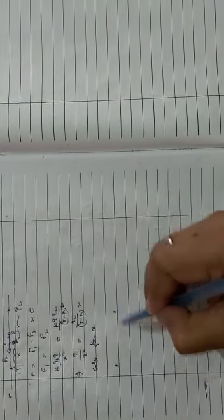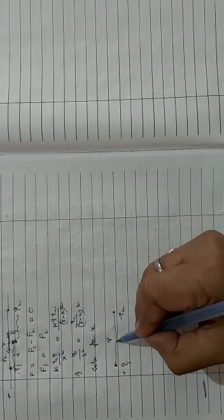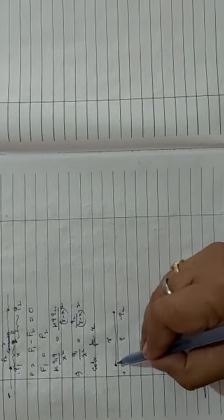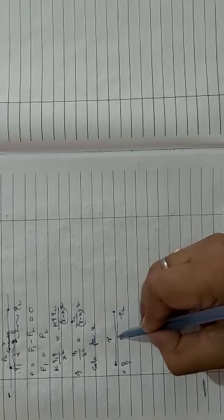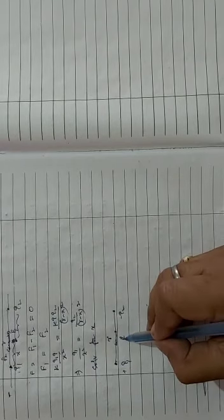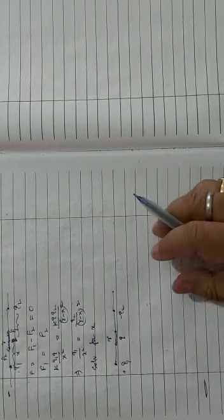But if Q1 and Q2 are unlike charges — one positive, one negative — then the equilibrium position of the third charge cannot be in between. If one charge is repelling, the other will attract, meaning both Q1 and Q2 apply force on Q in the same direction, so the resultant force will not be zero — they will add up. For that reason, you have to place Q outside these two charges, either to the left or to the right.